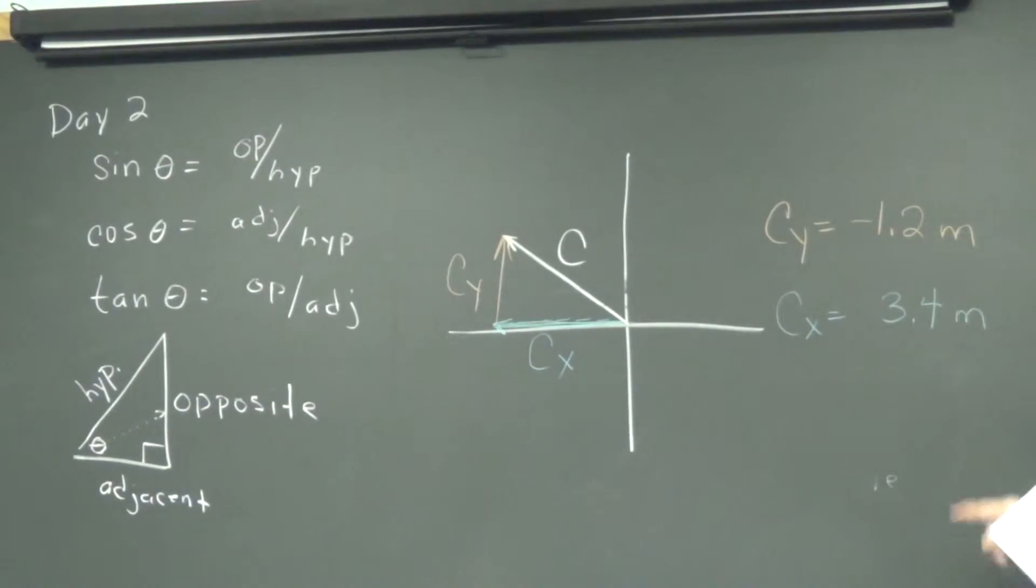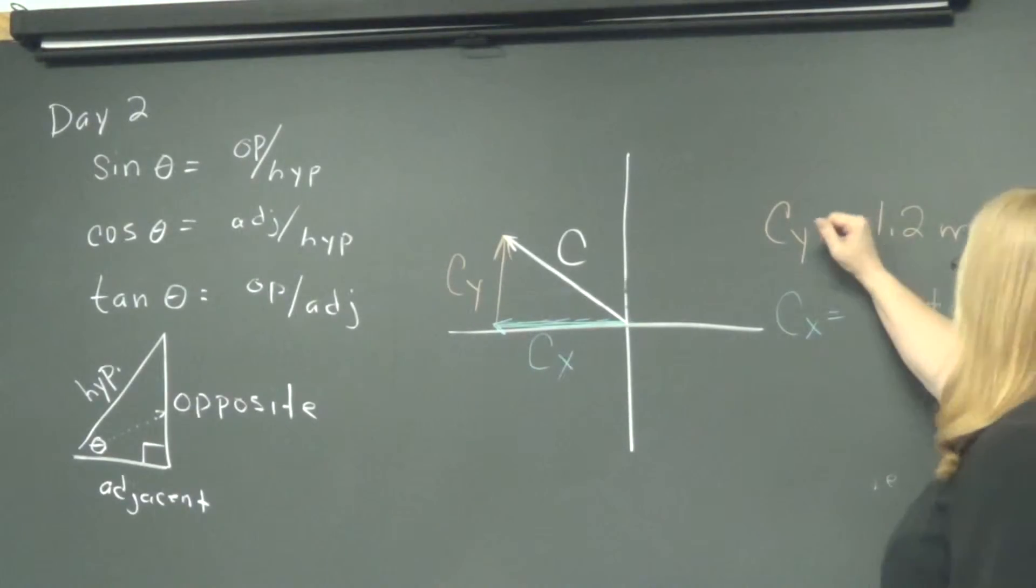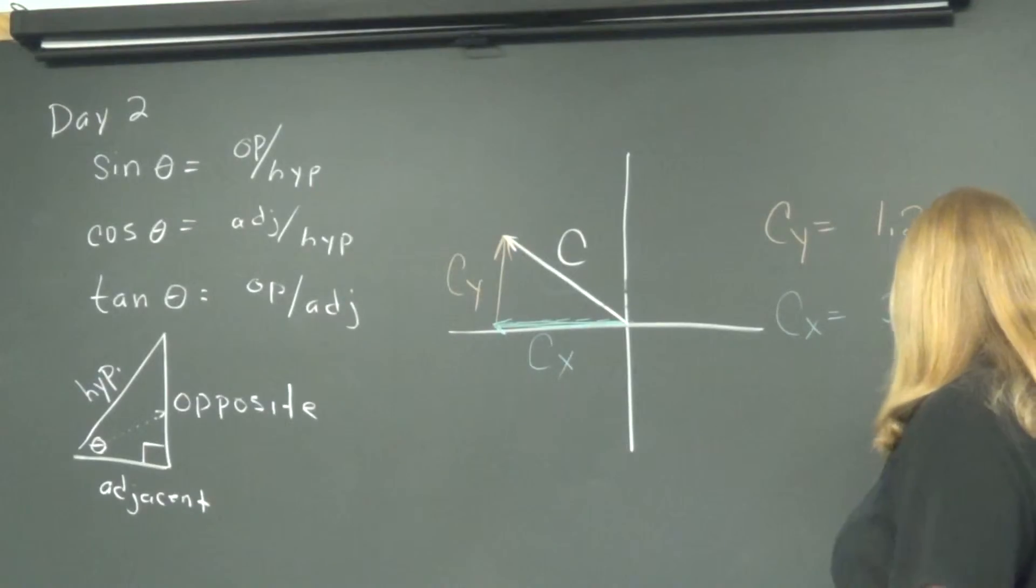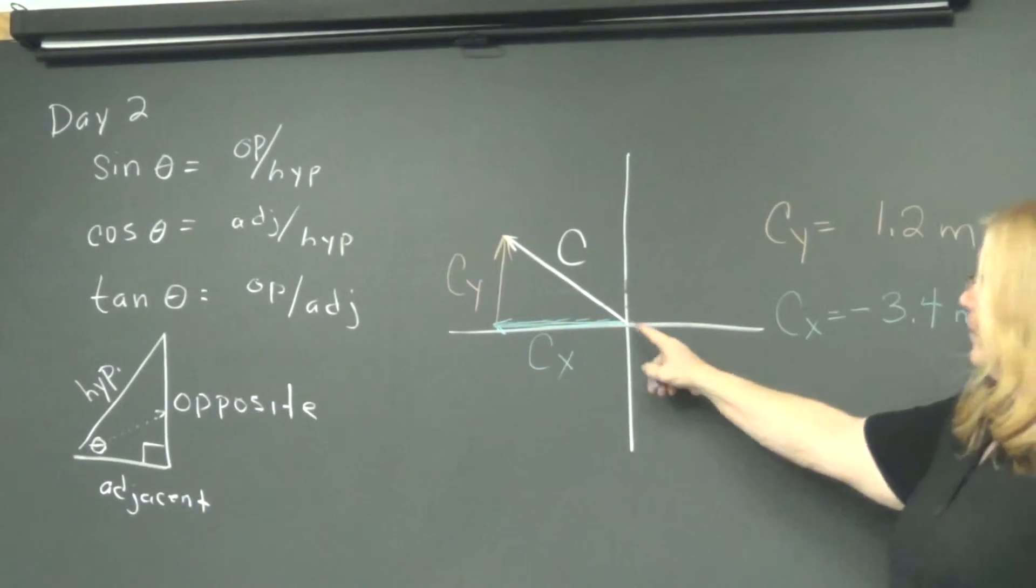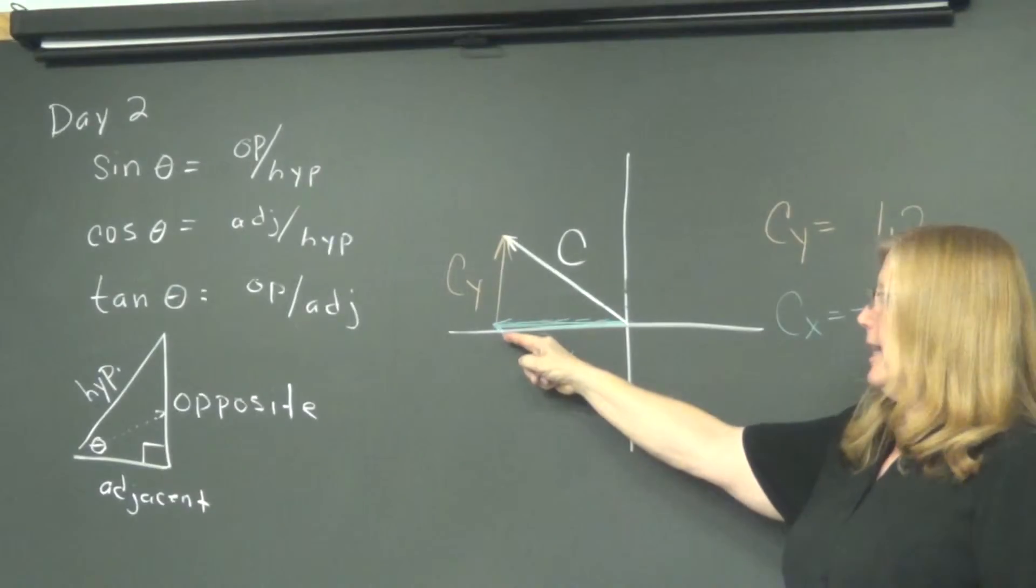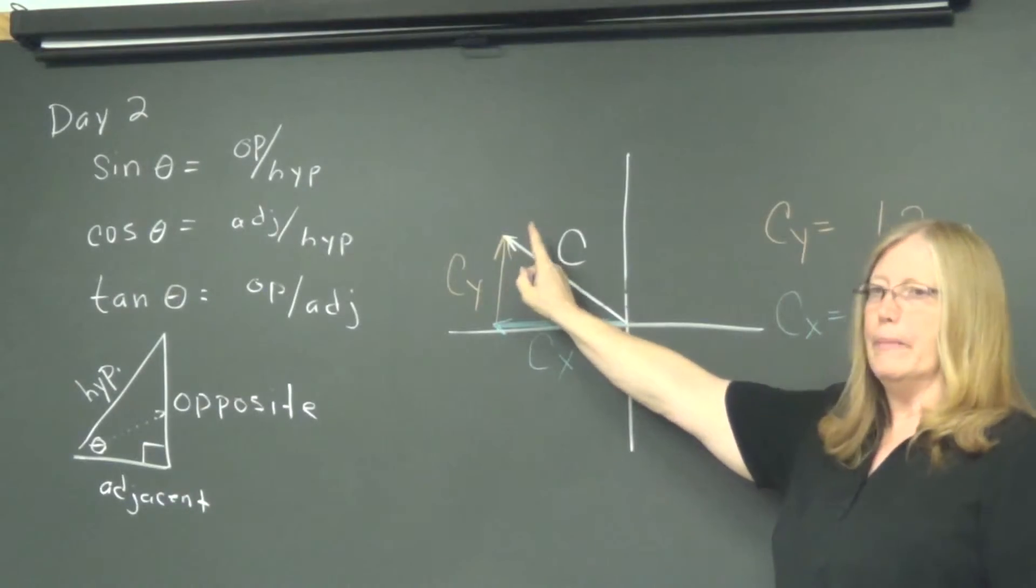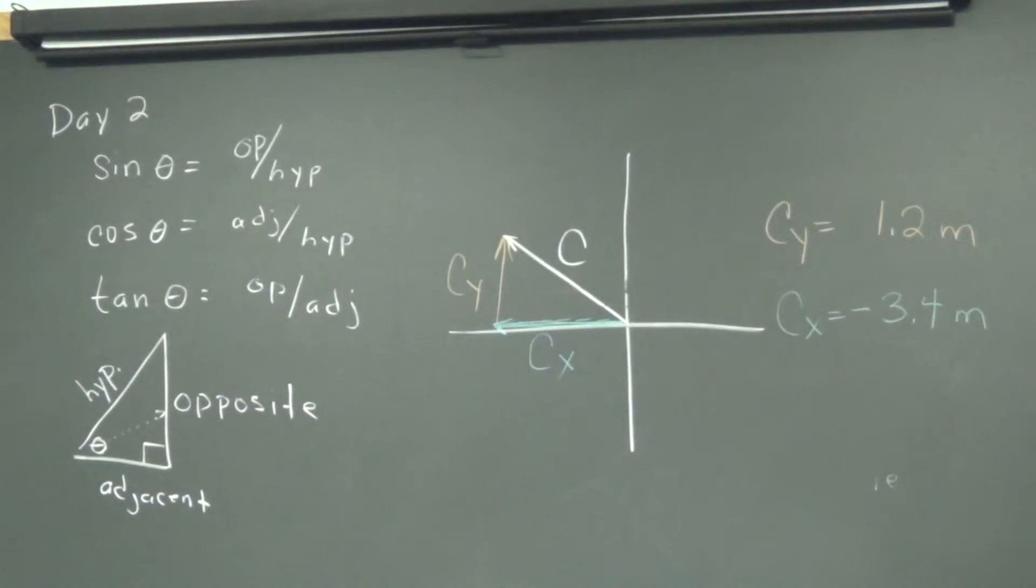Would this match the picture that I've drawn here? Does this have a negative Y component and a positive X component? No. So, let's switch those. So, let's make it match the picture. So, we'll say we have a positive Y component and a negative X component. Because from the origin, we went back. This is a negative. And then we went up. That's a positive. So, now it matches my picture.